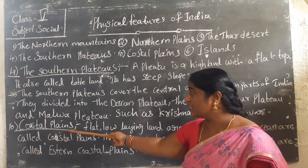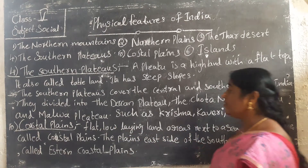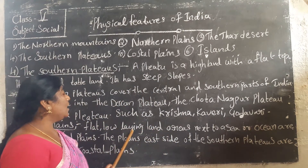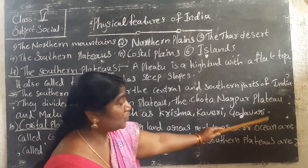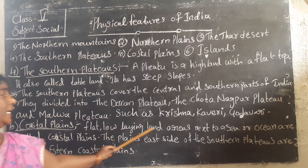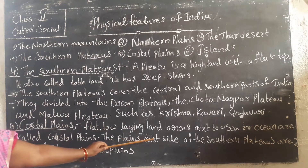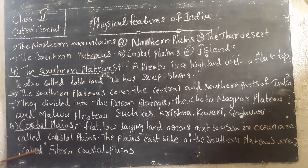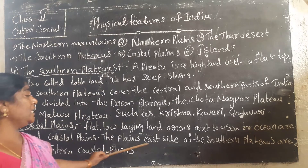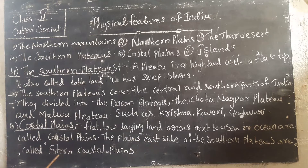Next is coastal plains. Coastal plains means flat, low-lying land areas next to a sea or ocean are called coastal plains. The plains on the east side of the southern plateau are called the Eastern Coastal Plains.